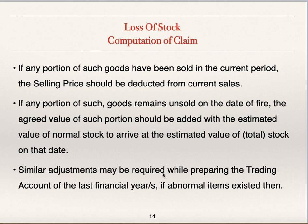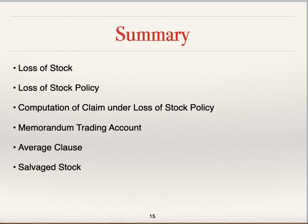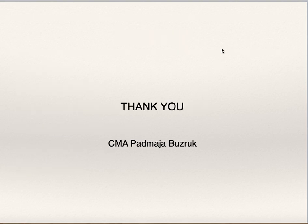Similar adjustments may be required while preparing the trading account of the last financial year if abnormal items existed then. In order to find out gross profit and gross profit ratio, you need to prepare the trading account of the last financial year, and if abnormal items exist in the last year also, you have to make adjustments. In this video we have seen loss of stock policy, computation of claim under loss of stock policy, memorandum trading account, average clause, and salvaged stock. Thank you.